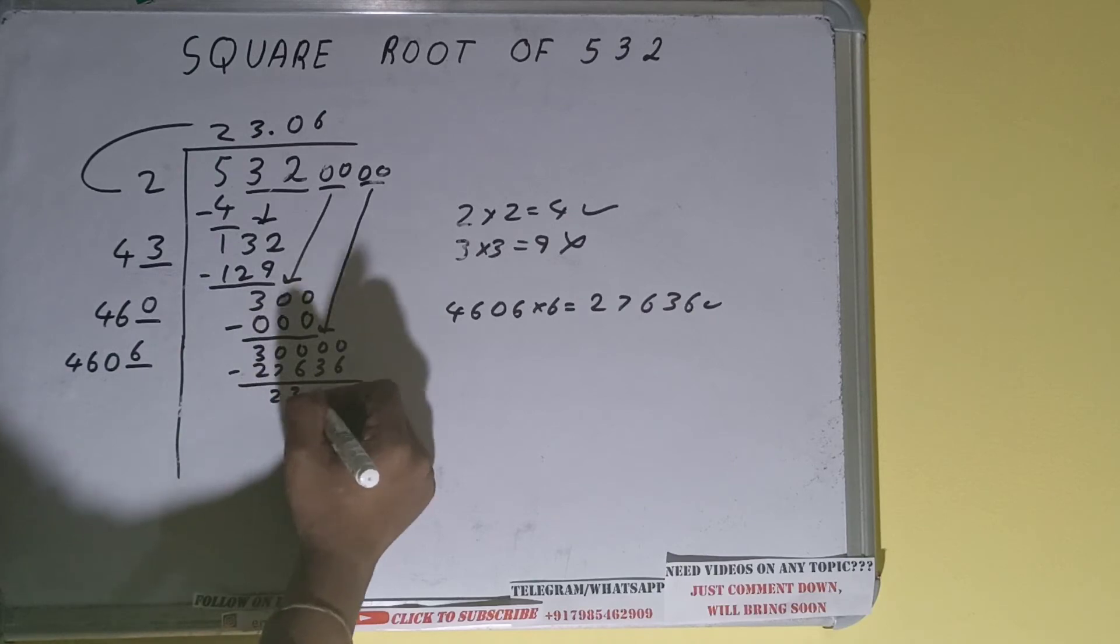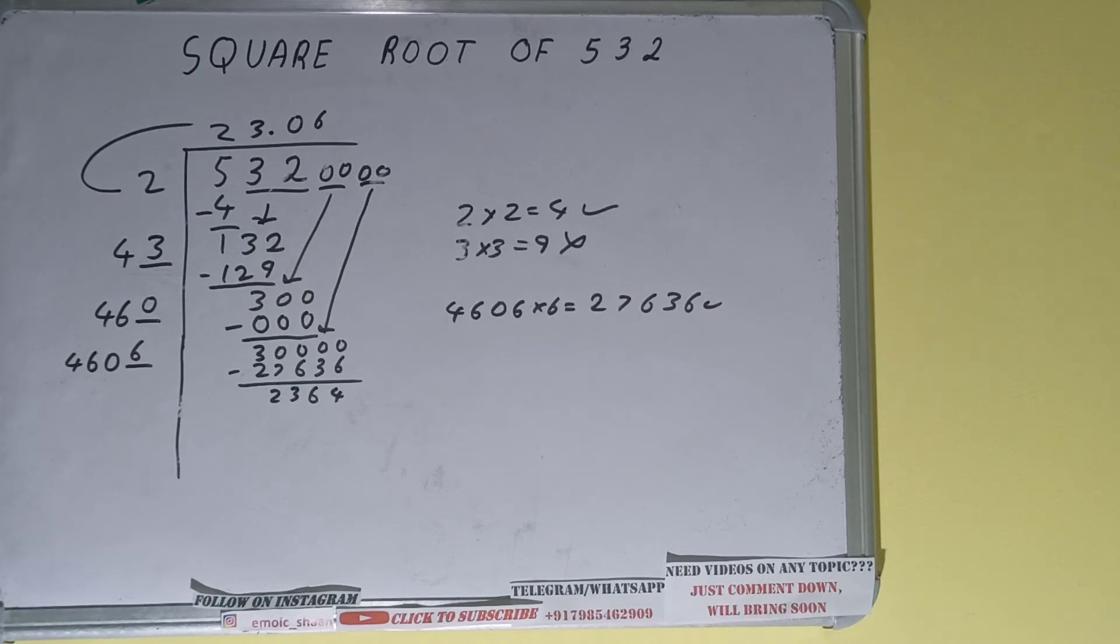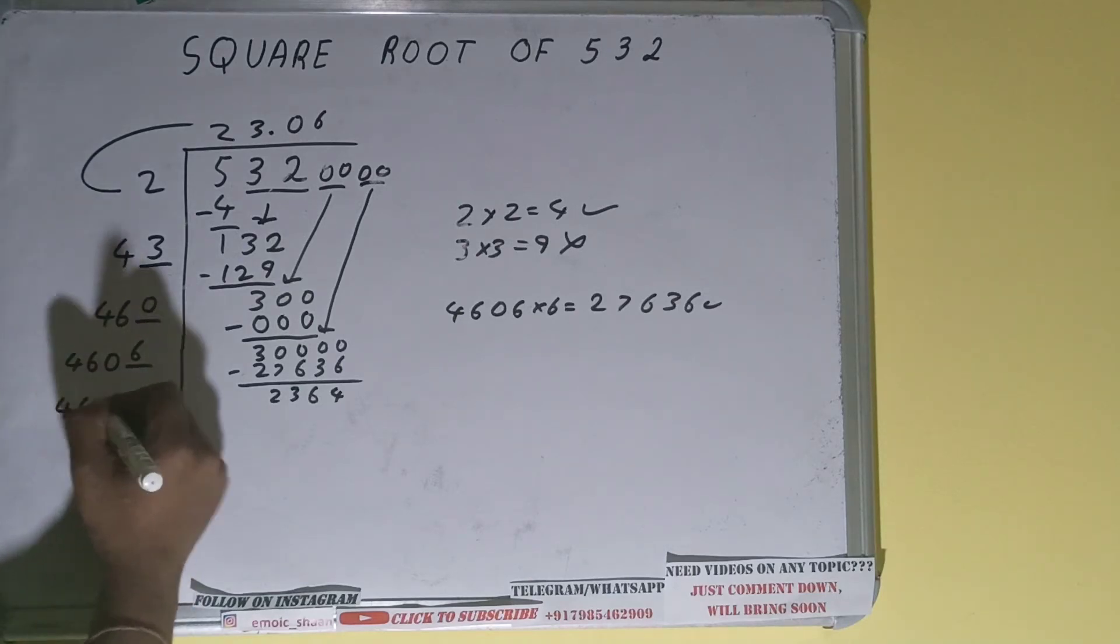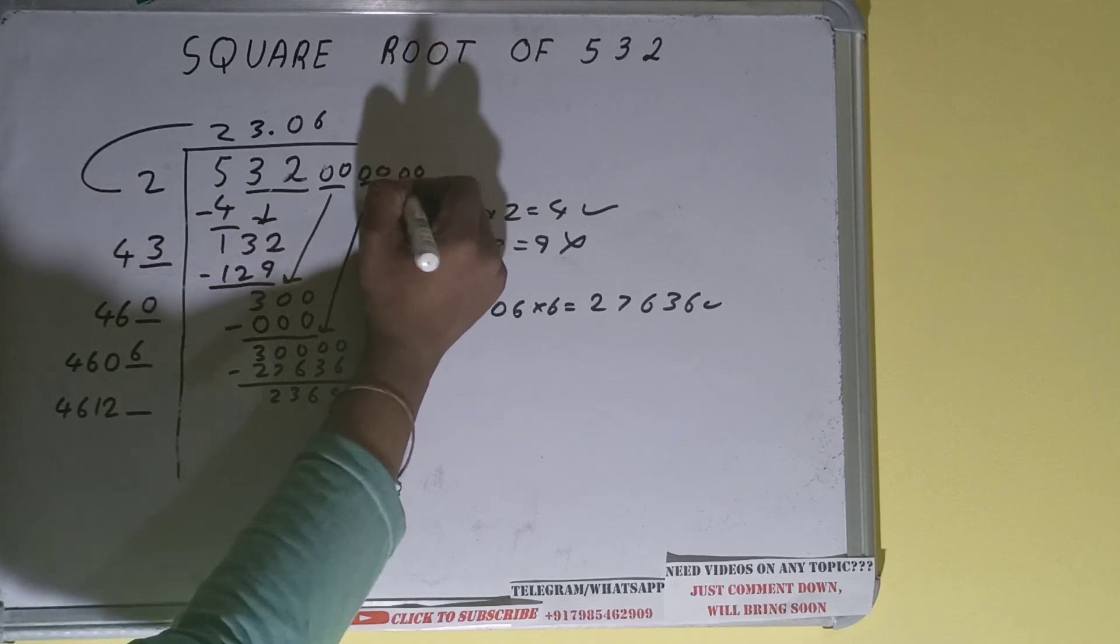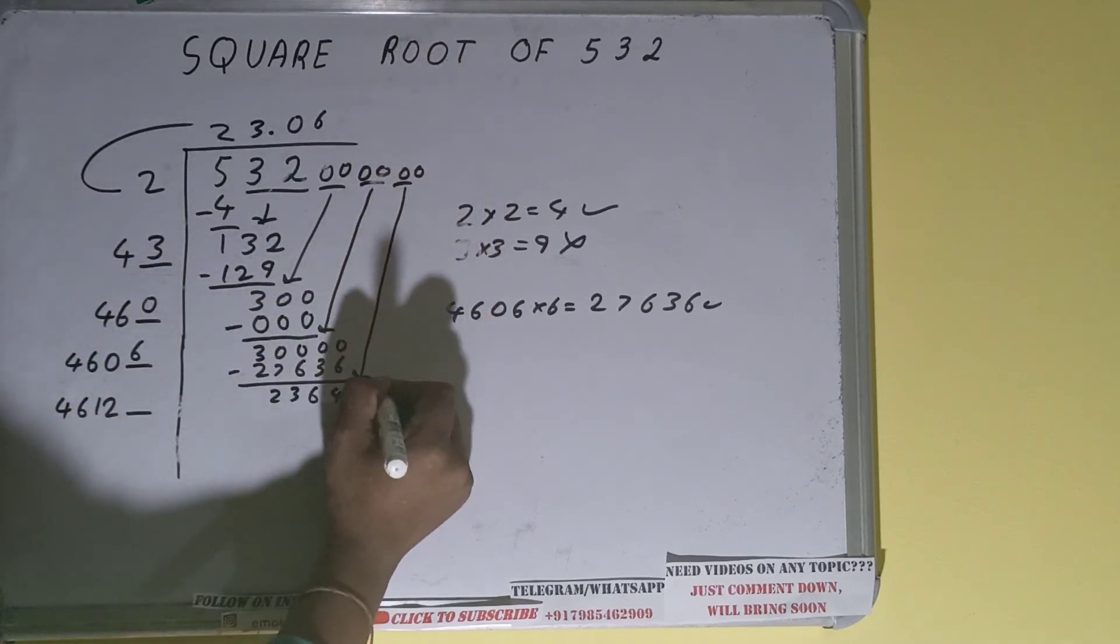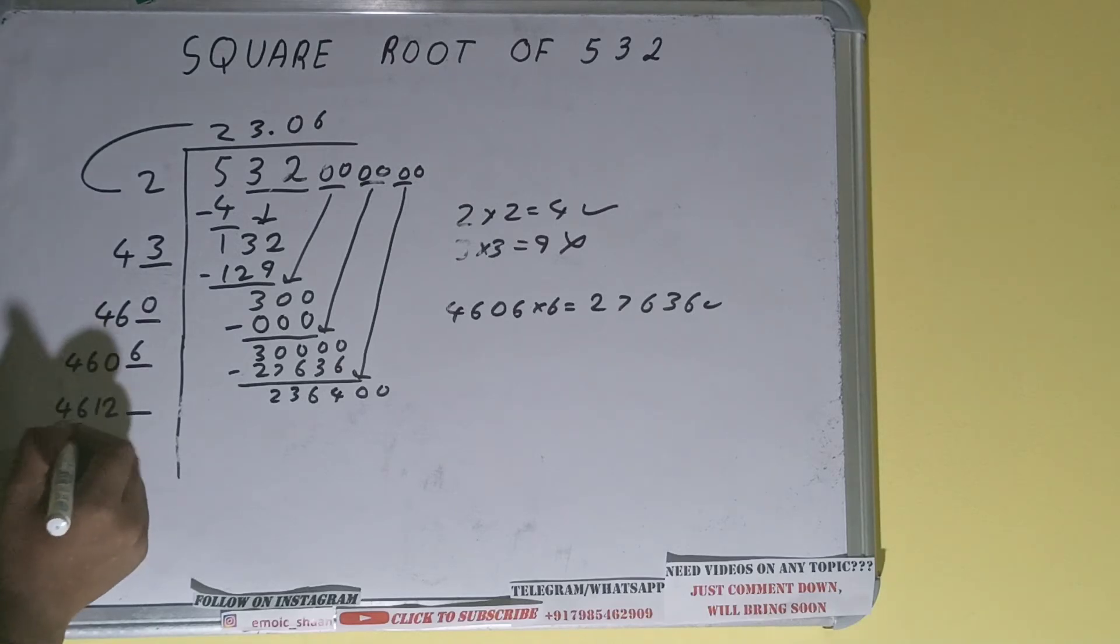23,364 will be left, so 4606 into 6 we did, so add both, so 4606 plus 6 will be 4612 and 1 digit extra, and this number we need to make it big, so bring the next pair of zeros down and it will become as 236,400. Now compare this 46 with this 236, so 46...